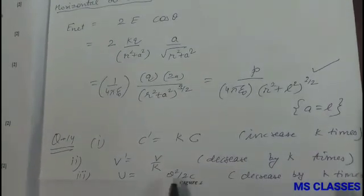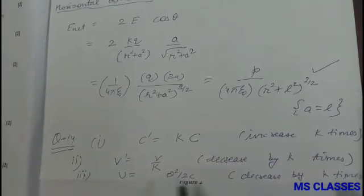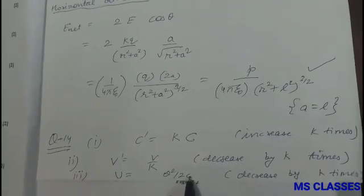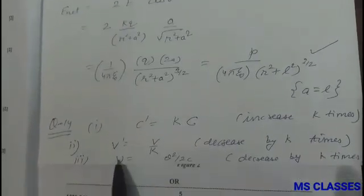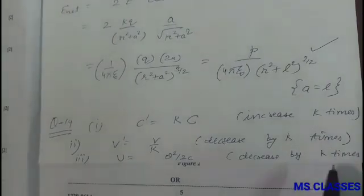And the potential energy, that is Q square by 2C, because Q remains constant in this case. So as you can see that C is increasing, therefore the energy will decrease by the same factor.